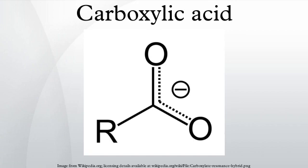Electronegative substituents give stronger acids. Deprotonation of carboxylic acids gives carboxylate anions. These are resonance stabilized because the negative charge is delocalized over the two oxygen atoms, increasing the stability of the anion. Each of the carbon-oxygen bonds in the carboxylate anion has a partial double bond character.